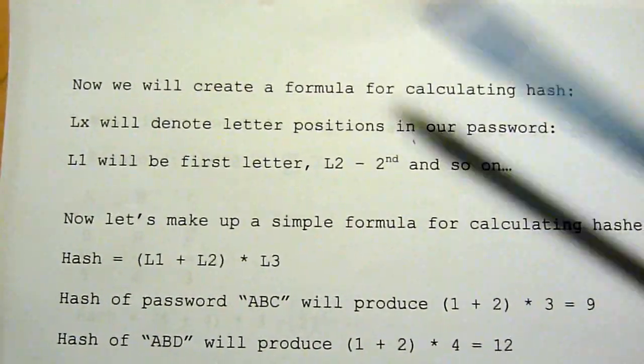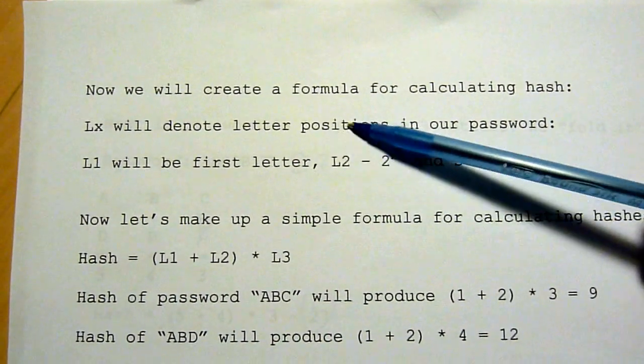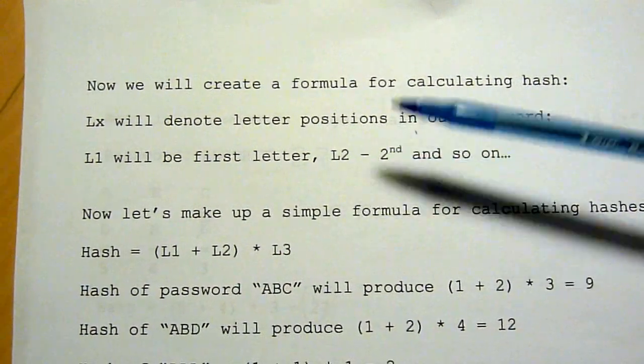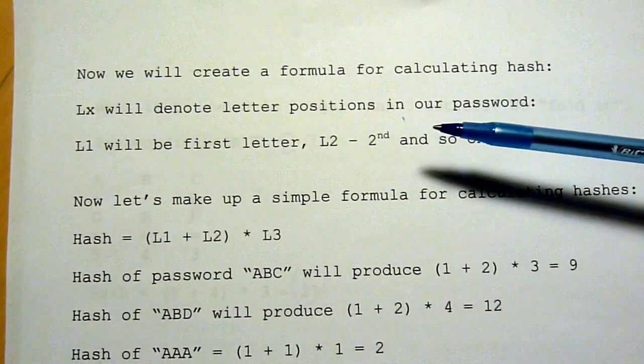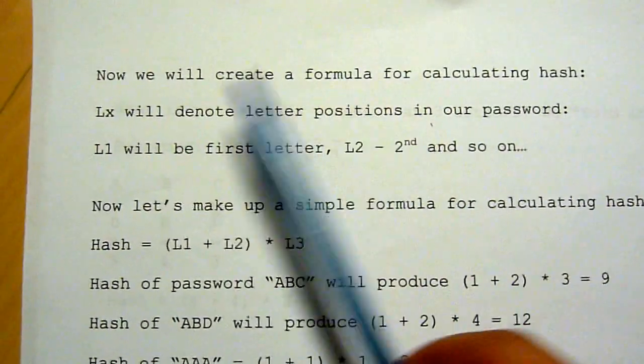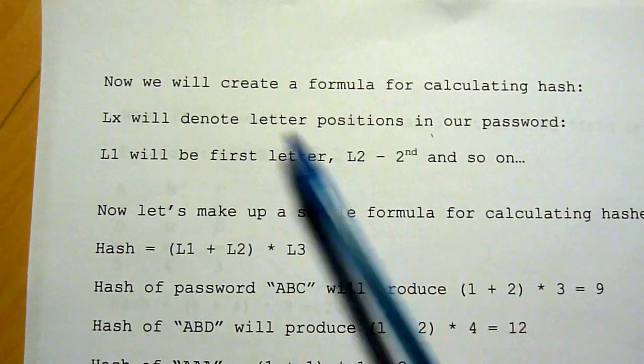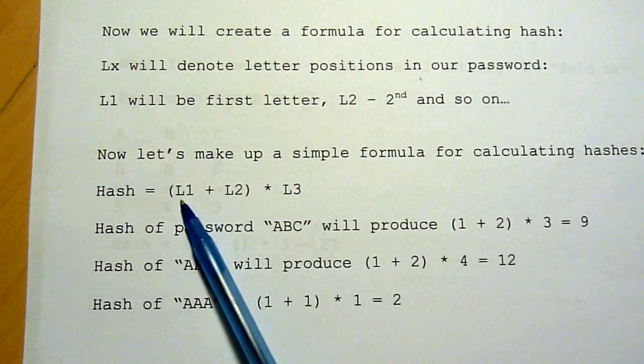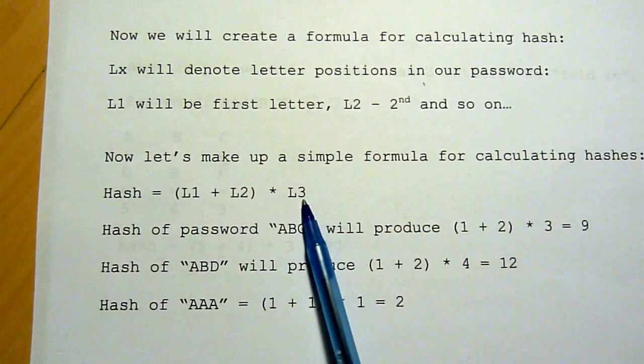So now let's create a formula. The actual formulas for calculating hashes are very complex and they're developed by mathematicians. So I'll make a simple one just to make it easier to understand. We will denote letters of our passwords as L1, L2, and so on. The formula that I made up will be L1 plus L2, and then take this result and multiply it by L3.